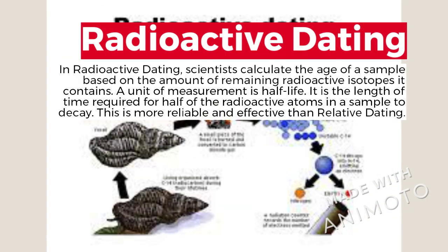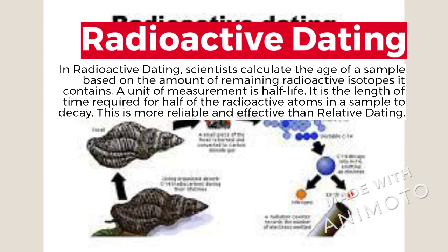Radiometric dating is more precise as it can calculate the age of the fossil based on the remaining radioactive isotopes it contains. The unit of measurement is half-life — the length of time required for half of the radioactive atoms in a sample to decay. This is more reliable and effective than relative dating because it is mathematically based.